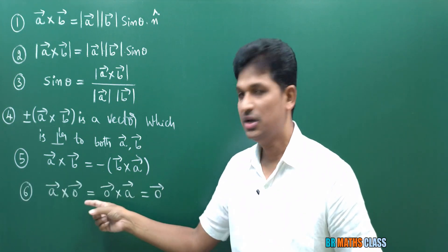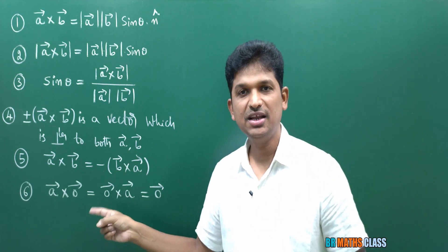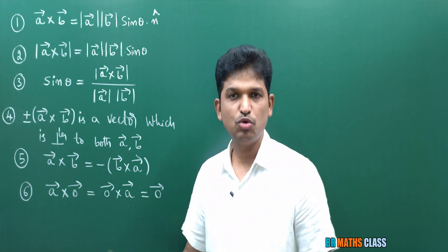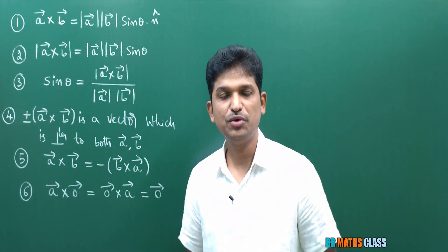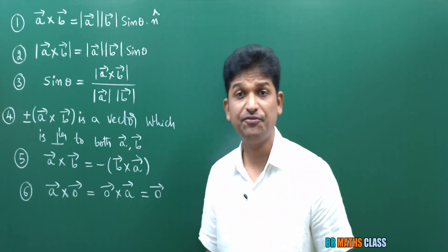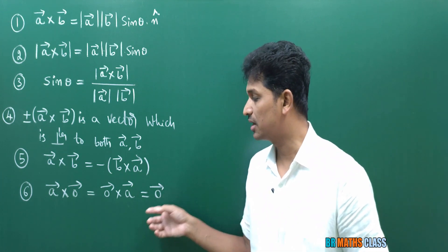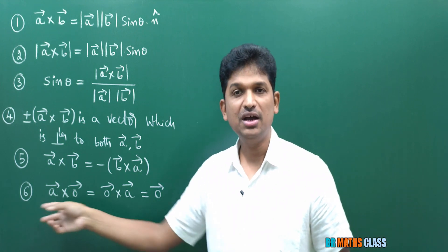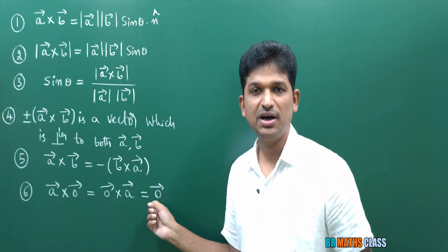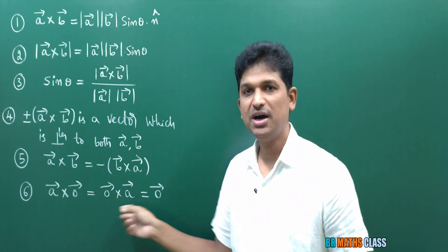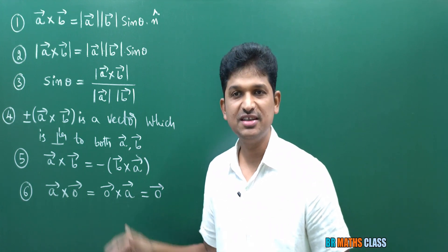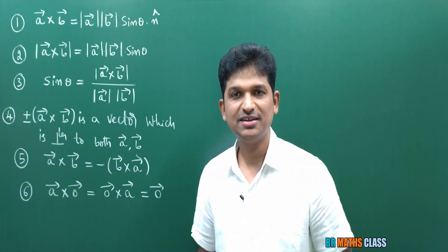While calculating cross product, if one vector is the zero vector or both vectors are zero vectors, then the cross product is defined as the zero vector. A bar cross zero bar is zero bar. Zero bar cross A bar is zero bar. This is the sixth formula.